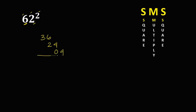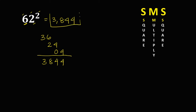Then adding: we have 4, then 6 plus 2 is 8, then we have 3. So 62 squared is equal to 3,844.